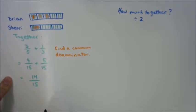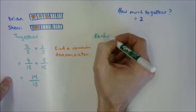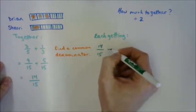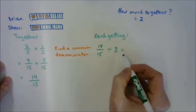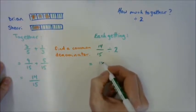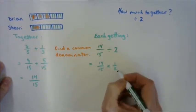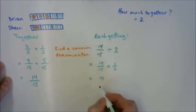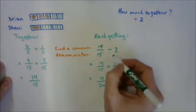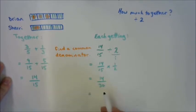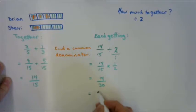Is this our final answer? No — we can divide by two. We need them still to share. They're starting with fourteen fifteenths of the chocolate bar, and in order to share they're going to divide it by two — they're each going to get half of this. So now we're bringing in what we learned in the last lesson about multiplying by the reciprocal. Two is two over one, so the reciprocal is one-half. Can this fraction be reduced? Yes — they're both even numbers, so I can divide by two. That gives us seven fifteenths.